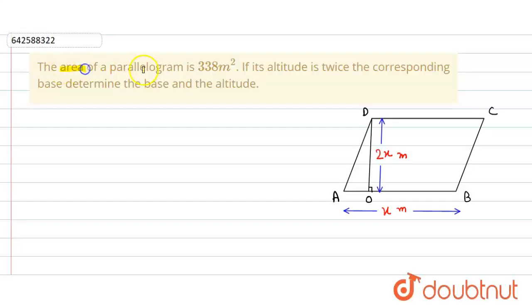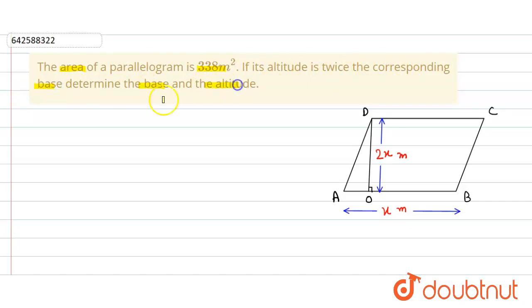In the given question, the area of a parallelogram is 338 square meters. If its altitude is twice the corresponding base, then we have to determine the base and the altitude of this parallelogram.